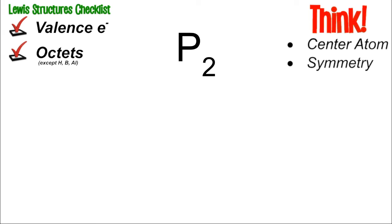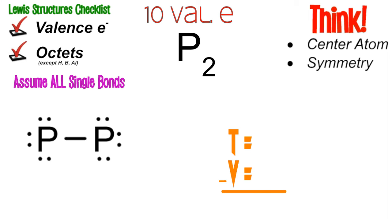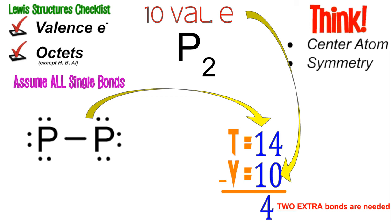Next, P2. Group 15, so 5 times 2 is 10 valence electrons. Assuming all single bonds, bond P to P and complete octets. The picture has 14 electrons but we're supposed to have 10 — a difference of four means two extra bonds are needed. Extra bonds must be added onto an existing bond, not into space. With only one bond between the two phosphorus atoms, that single bond becomes a triple bond. Then complete the octets by adding two more electrons on each side to make eight. The picture now totals 10 electrons. The triple bond between the two phosphorus atoms is confirmed.